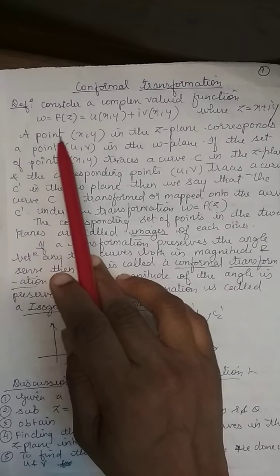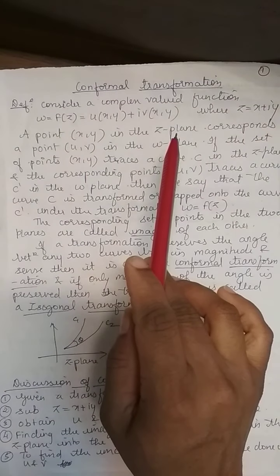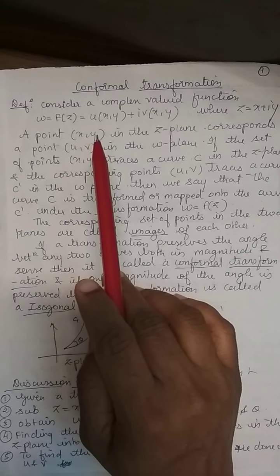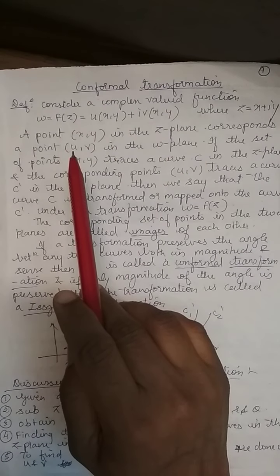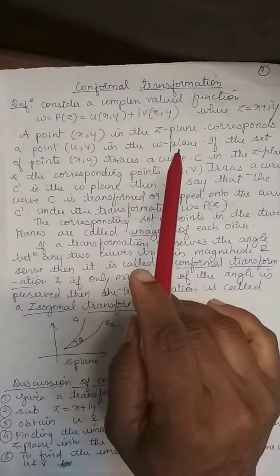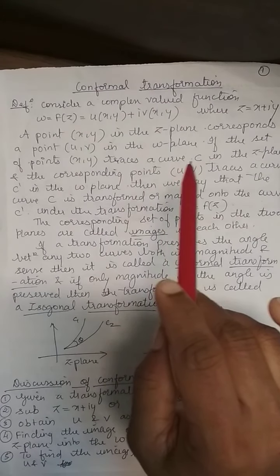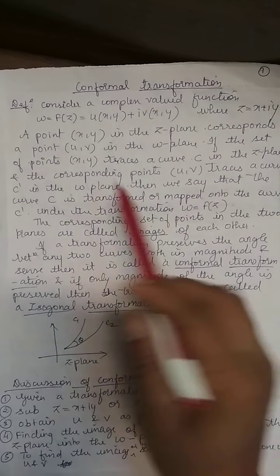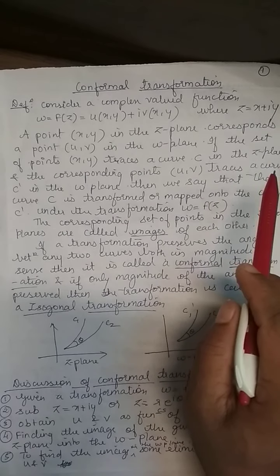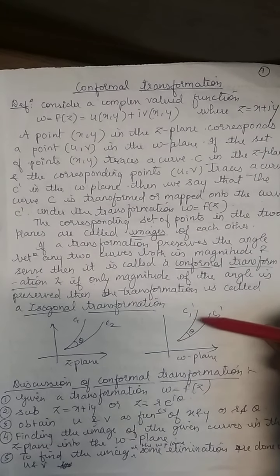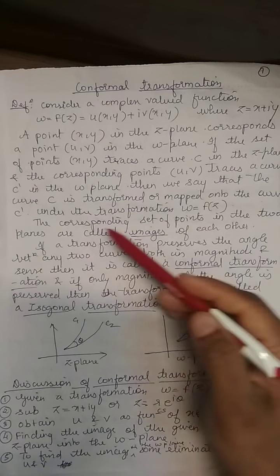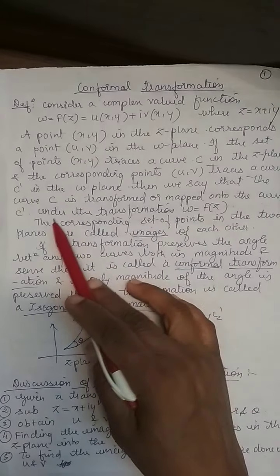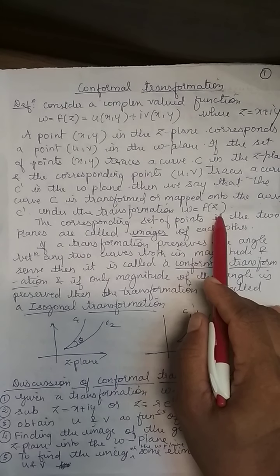A point (x, y) in the z-plane corresponds to a point (u, v) in the w-plane. If the set of points (x, y) traces a curve C in the z-plane, the corresponding points (u, v) trace a curve C' in the w-plane. Then we say curve C is transformed or mapped onto curve C' under the transformation w = f(z).